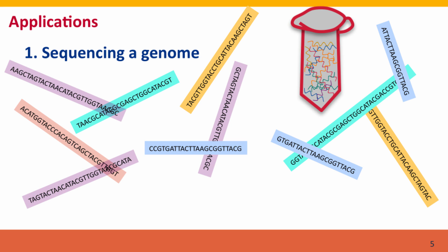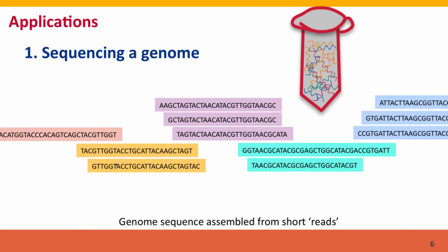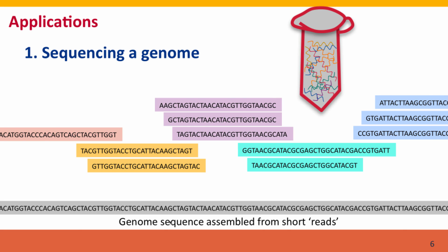I'm going to describe three applications. The first is sequencing not just a gene, but a whole genome. For an organism with a relatively small genome, we can take a single sample tube with the entire genome broken into fragments and sequence all the fragments. By comparing the fragments, we can line them up and find the overlaps that allow us to infer the complete genome sequence from the assembly of these short reads. For a larger genome, we can do the same thing, but we'll need to use multiple samples.